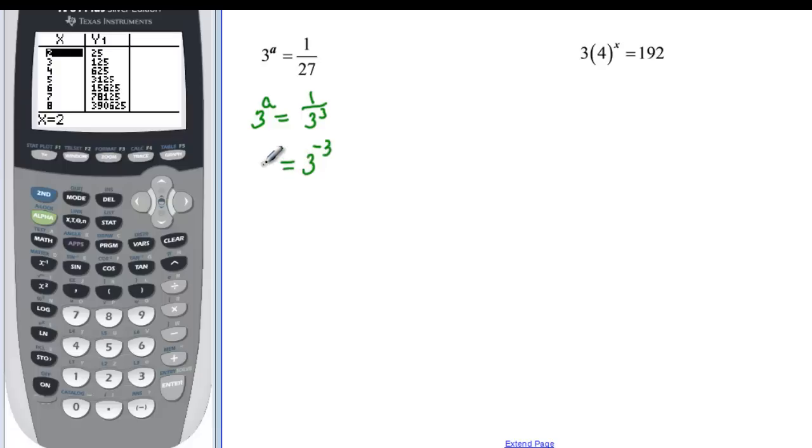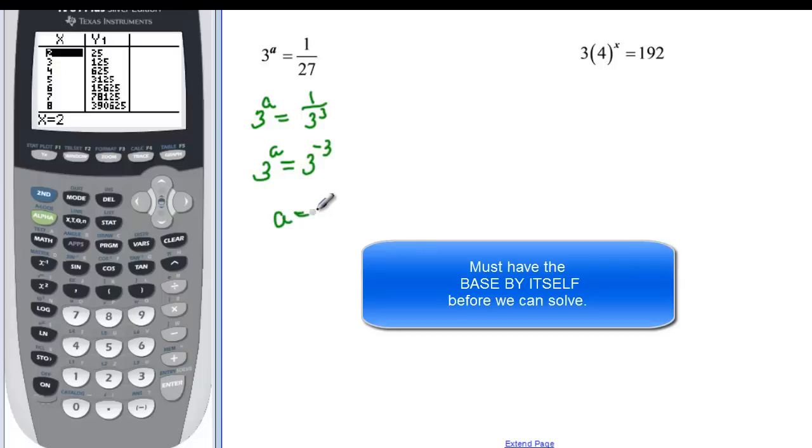That would be the same thing as 1 over 27. And if 3 to the a is equal to 3 to the negative 3rd, if my bases are the same, then my exponents must be equal.